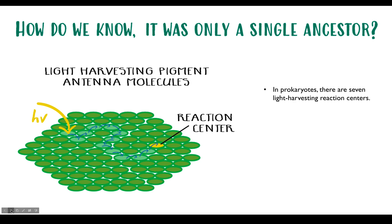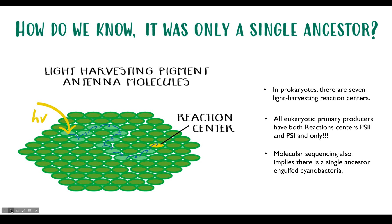In bacteria, we have seven light harvesting reaction centers, and eukaryotes only have two — and cyanobacteria only has two. And they're the same ones. Supporting the molecular sequencing evidence is the fact that photosystem two and photosystem one exist in all eukaryotic photosynthesizing organisms. No eukaryotic photosynthesizer has any other type of photosystem — and these are chlorophyll-based systems. Bacteria has a big mishmash of seven different ones, chimeras of various pigments gained and lost over time. But cyanobacteria has had photosystem two and photosystem one for eons.